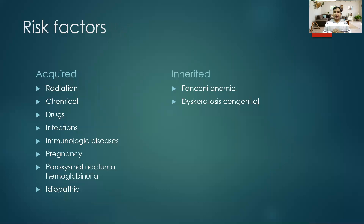The risk factors for aplastic anemia are acquired and inherited. In the acquired category: radiation exposure can cause aplastic anemia. Chemical exposure, especially benzene, can cause aplastic anemia. Some drugs that can cause it include allopurinol, NSAIDs, and cyclosporine. Different chemotherapeutics can also cause aplastic anemia. Regarding infections, one important cause is seronegative hepatitis — that is non-A, non-B, and non-C hepatitis. We do not know exactly what type of hepatitis causes this condition, but seronegative hepatitis is an important precipitant.